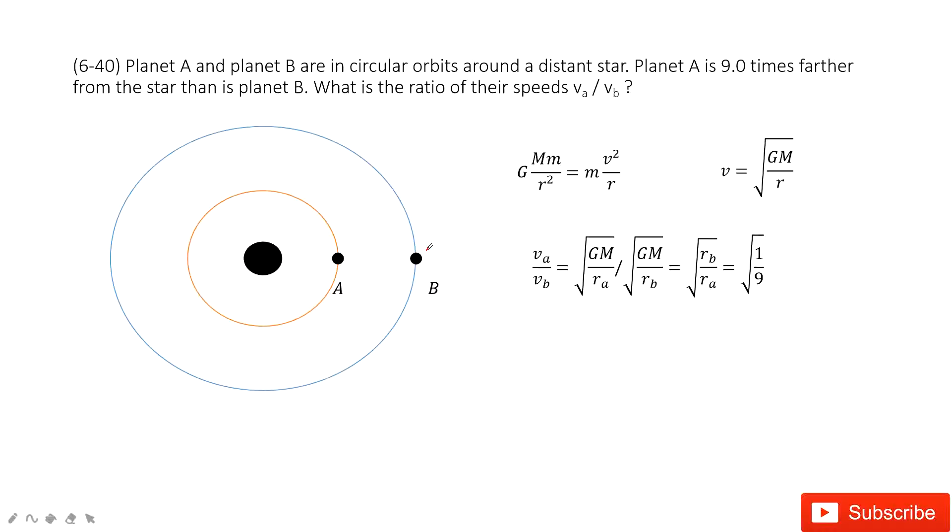In this one, we consider the circular motion, right? Circular orbit around a distant star. This star we don't know but no problem. There are two planets A and B. They are at different distances.